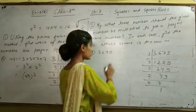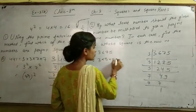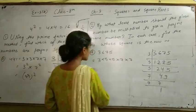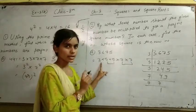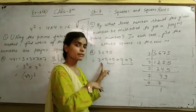We have written 3 into 5 into 5 into 7 into 7. Now, this is a pair, this is a pair. This is not a pair, this is not a pair. So what do we multiply? We multiply by 3.